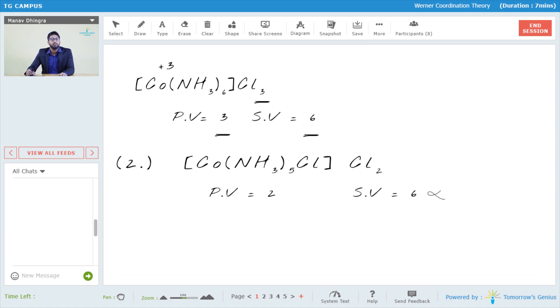As Werner told, the primary valency is satisfied by the charge. The charge on cobalt is +3. How do we know that? Let's say on cobalt it's x. For ammonia, because it's a neutral molecule, we don't have any charge. On chlorine it's -1, and it's equal to the charge of +2.